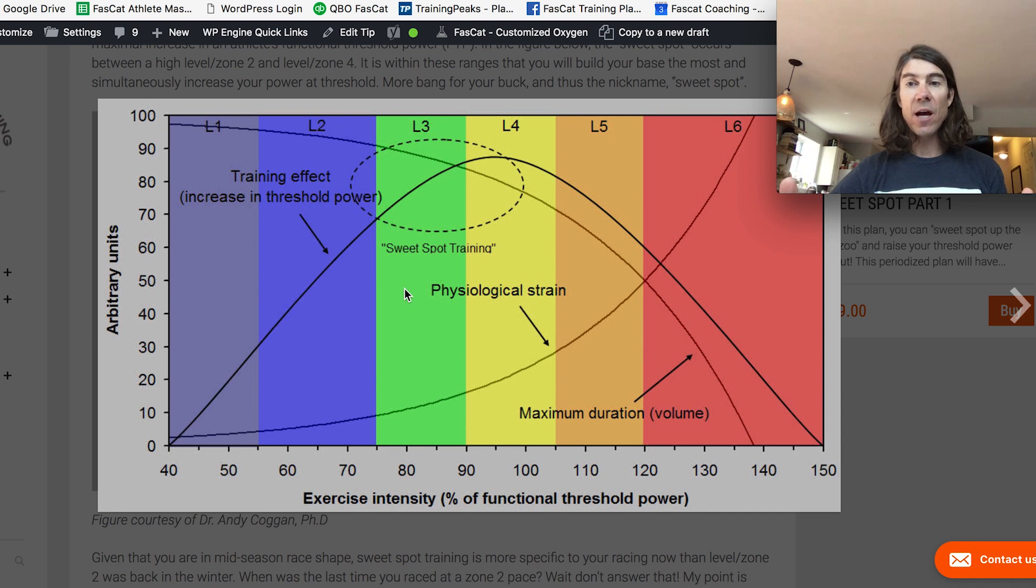I mentioned physiological strain from threshold training relative to sweet spot training. And I want to show you what I'm talking about there. So in this graph, just like the table, we're talking about zones one, two, three, four, five, six, as we go from left to right.